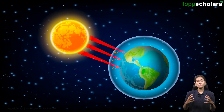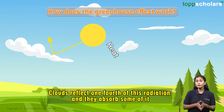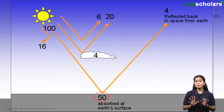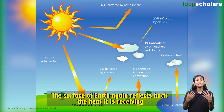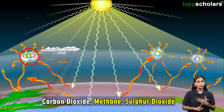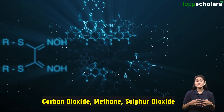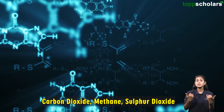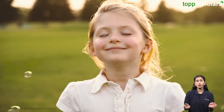On earth, the sun is constantly radiating light towards us. The clouds reflect one-fourth of this radiation and absorb some of it. Due to this, around 50% of the sun's radiation falls on earth. Earth's surface reflects back heat, but clouds trap it due to greenhouse gases like carbon dioxide, methane, and sulphur dioxide. These gases prevent heat from escaping, causing the heat to return to the earth. This system was working well to create a pleasant atmosphere on earth.